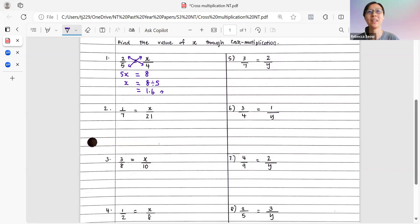Next question. 1 out of 7 equals to x out of 21. Draw the arrows. And let's multiply accordingly. So this diagonal has the variable x, 7 times x, 7x equals to 1 times 21. x equals to 21 divided by the coefficient of x, which is 7. Press this into the calculator, and we will end up with 3.